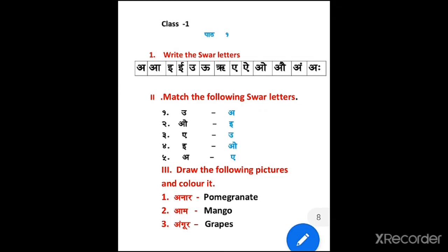I have given only three exercises for you. It's very simple and easy. First exercise: write the swar letters A to Aha. Second exercise: match the following swar letters. Third exercise: draw the following pictures and color them.